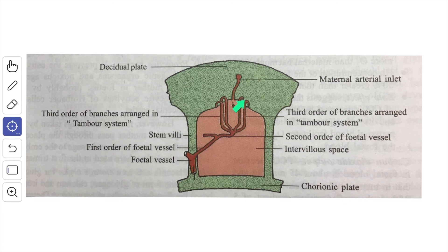The arrangement of the third order branches take place in a circular fashion around the periphery of an imaginary cylindrical core which is villus free. There is one spiral arterial inlet from the maternal side for each tambour system, so that the maternal blood in the basal plate is poured into the villus free central area of the tambour system.